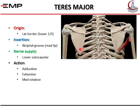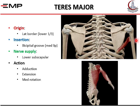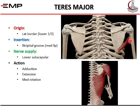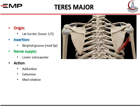The teres major lies below the teres minor. It arises from the lower third of the lateral border of the scapula and goes to the front of the humerus, inserting into the medial lip of the bicipital groove. Its nerve supply is the lower subscapular nerve, similar to subscapularis. Its actions are different: it adducts the shoulder, extends it, and because it inserts on the front of the humerus, it rotates the humerus medially rather than laterally.